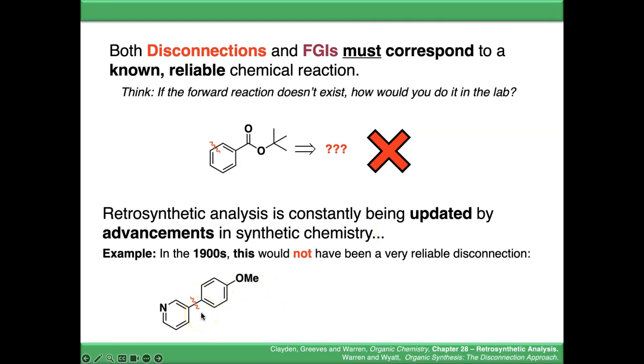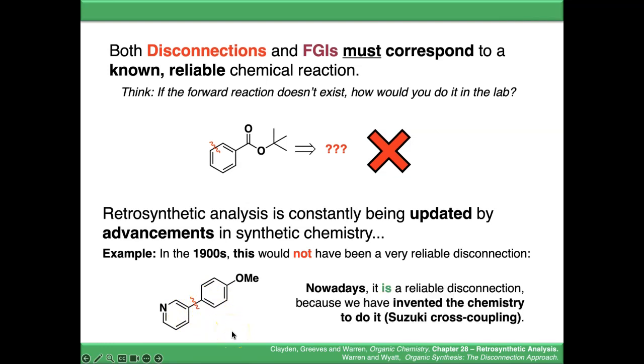if the disconnection approach existed in the 1900s, this disconnection wouldn't be a reliable one, because there was no chemistry known that could form this type of bond. But nowadays, it is a reliable disconnection, because we've invented Suzuki cross-coupling. It's constantly being updated, but you have to look at what reactions currently exist for disconnections like this.